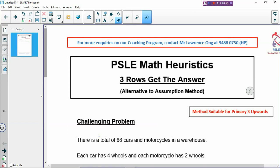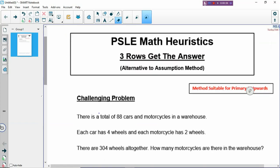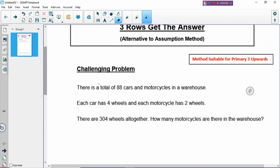We are not going to talk too much about this method. I am just going to tell you generally how to use this method to replace assumption. Let's read the question and then we of course underline and highlight the important words. There is a total of 88 cars and motorcycles.